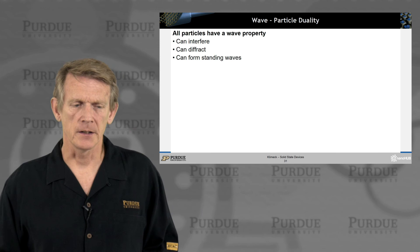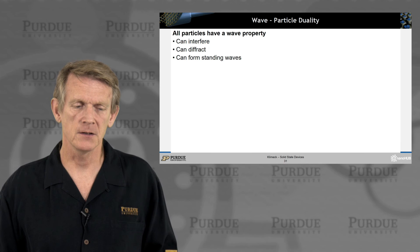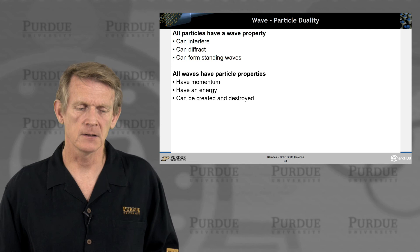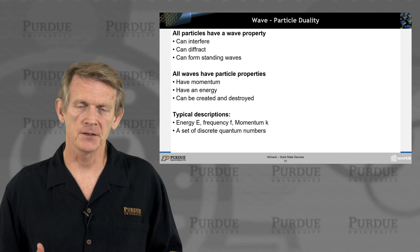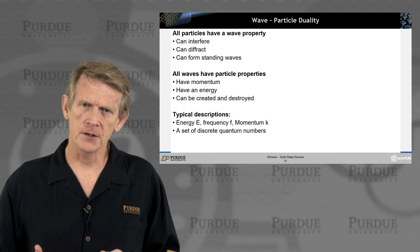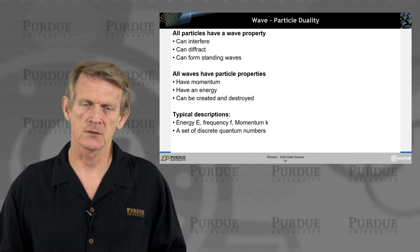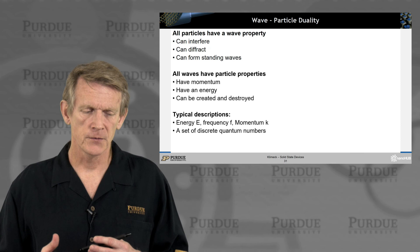All right. So if I now go back to what I had discussed earlier, right? Particles can have wave properties. They can interfere and diffract. They can form standing waves. And all waves have particle properties. They have momentum, they have an energy, and they can be created and destroyed. And the typical descriptions you choose, it depends on what you like to describe. These particle or wave duality, the particle description or wave description, really depends on what is convenient for you to use as a description. They're not at odds with each other.